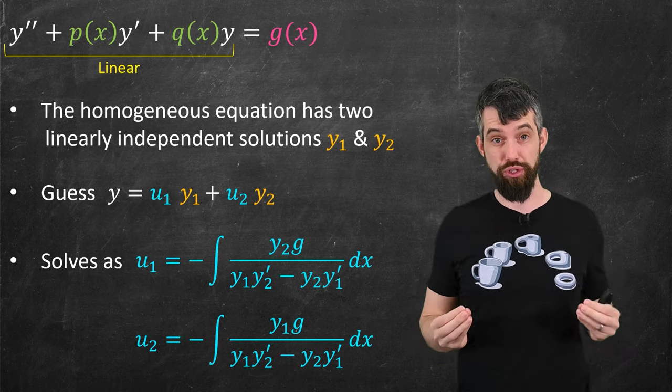I want to contrast this with undetermined coefficients, another method students often see for this type of equation. Undetermined coefficients works by guessing a solution that looks like the right-hand side — for example, if it were sine(x), you'd guess a combination of sine and cosine. But that method doesn't work here because the derivatives of tangent keep getting messier: first tan, then sec², then 2·sec²·tan(x), and so on. It never becomes a linear combination of previous derivatives, so there's no hope of a clean guess. Undetermined coefficients is great — no integrals required — but it only sometimes works, whereas variation of parameters always works, as long as you can find y1, y2, and evaluate the integrals.